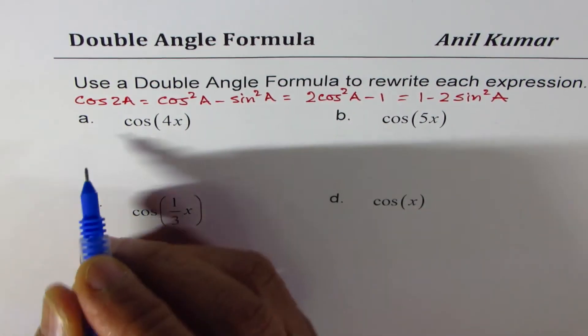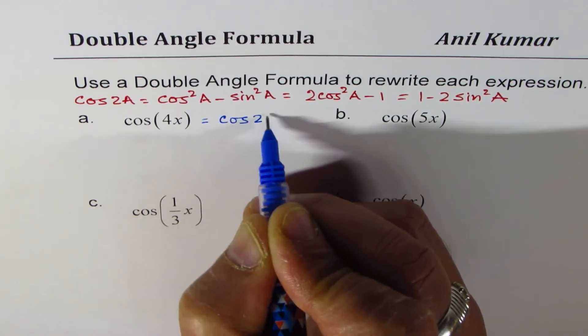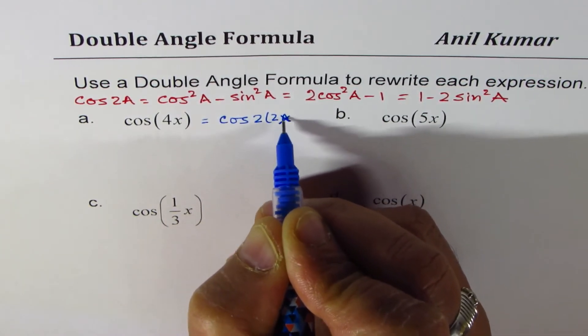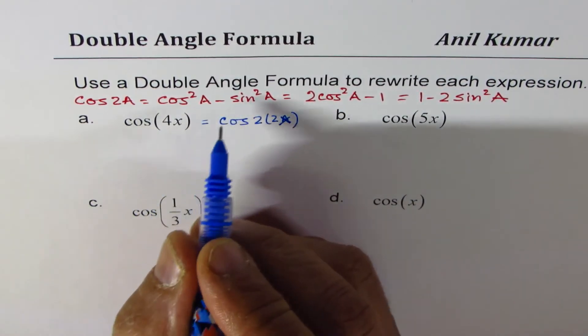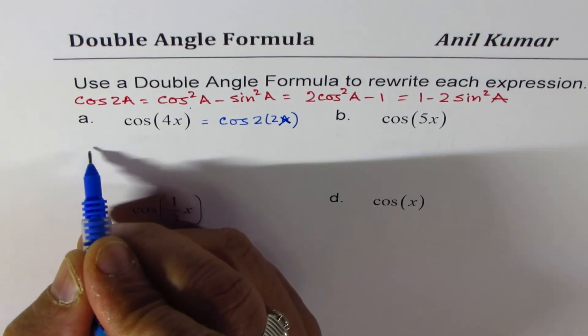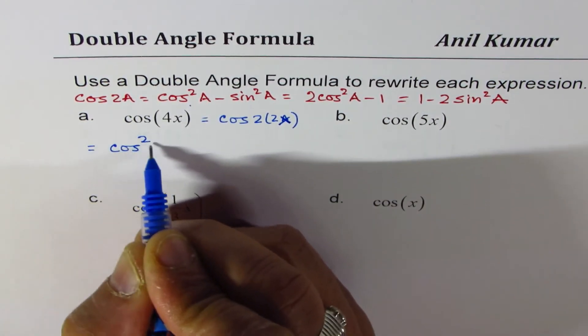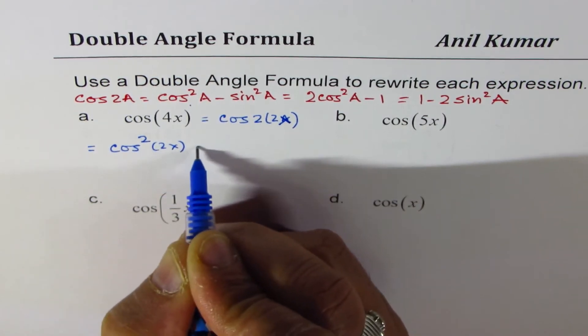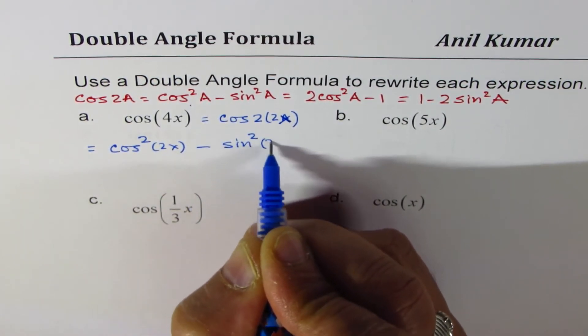cos 4x, I could write this as cos of 2 times 2x. Now, cos of 2 times 2x, I could use this formula, for example, and write this as cos square 2x minus sine square 2x.